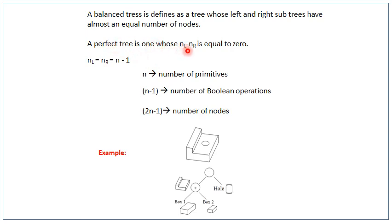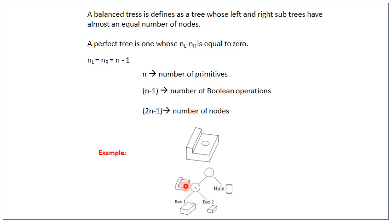A perfect tree is one where nL minus nR equals 0, meaning the left-hand side and right-hand side node counts are equal. For example, box 1 obtained by extruding a square and box 2 from another rectangle lead to A union B. And in the case of a hole in the object, A minus B gives the final product with the hole subtracted. Box 1 plus box 2 is one boolean operation, and box minus hole is another, leading to the final end product.